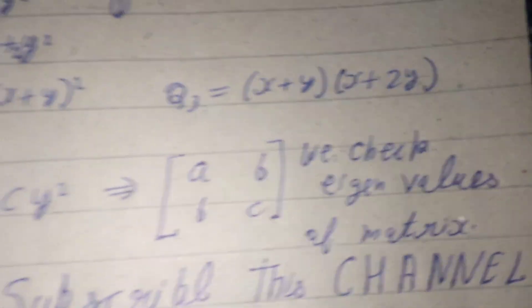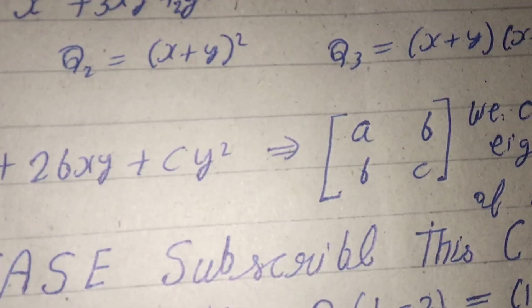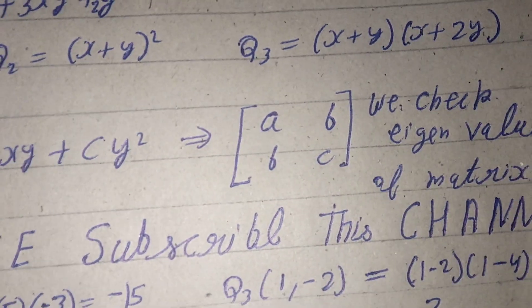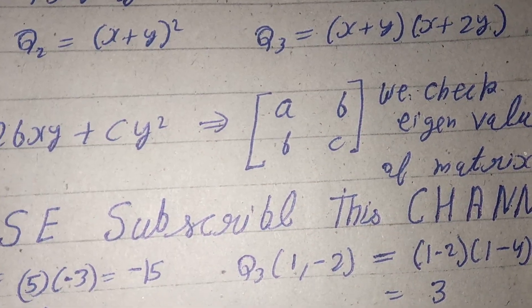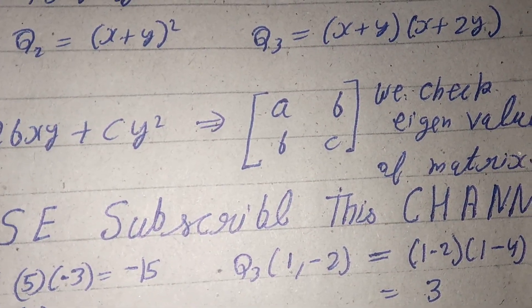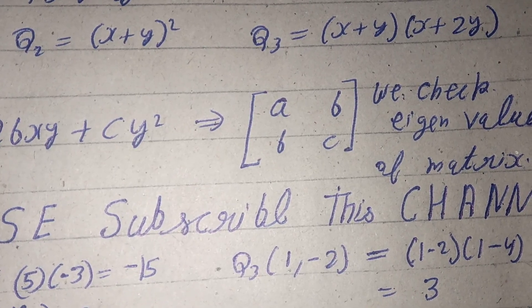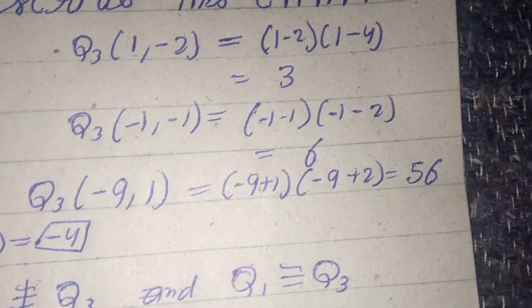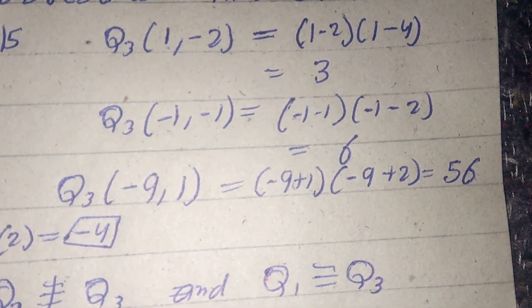We can see here q2 is a perfect square, but q3 is a product of two different linear terms: (x + y) and (x + 2y). And we can now show that q3 can take both positive and negative values.